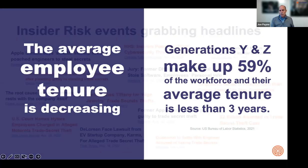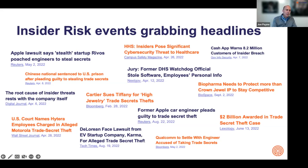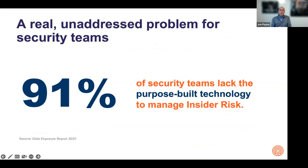So we talked about the three drivers of risk. The result is a lot of lawsuits. There are many organizations not managing this problem by nipping it in the bud when it happens as people are leaving. Then a year later you end up in a lawsuit, end up in the press, etc. — and these are all from 2022. Nine out of ten companies don't have any technology or any specific program to deal with insider risk. How can that possibly be?